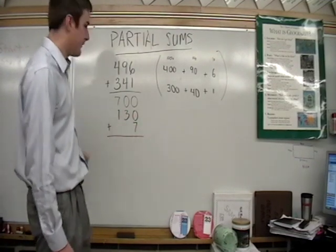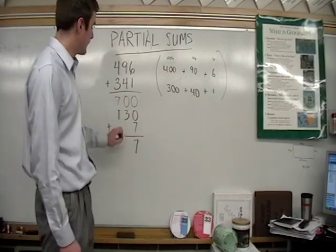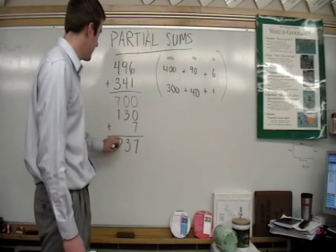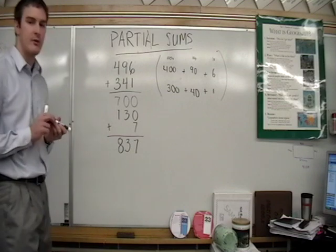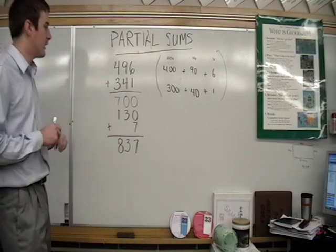Let's add these parts. Zero and seven is 7. Zero and three is 3. Seven and one is 8, for an answer of 837. Again, adding the parts of the number.